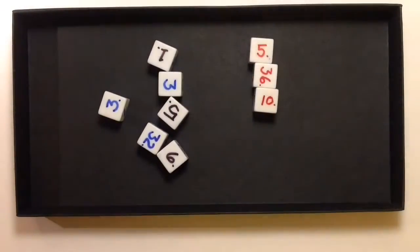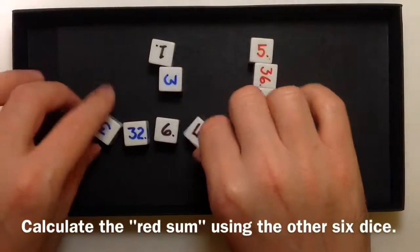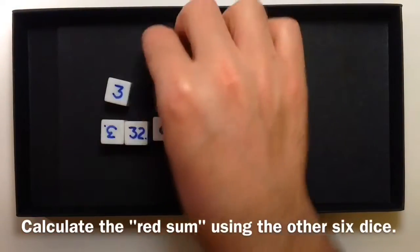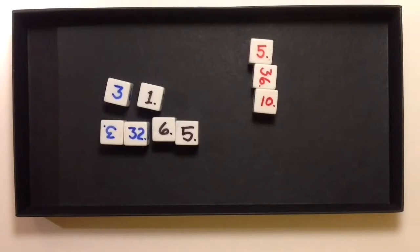Then separate the red dice and add up the numbers on the red dice. So here we have 51, and then using the other six dice, try to calculate 51. If we can, we want to try to use all six dice in the calculation. That will give us six points. If we use five dice, we'll get five points.